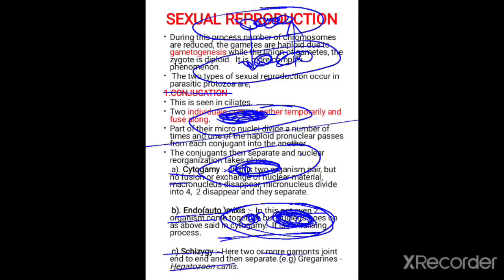This is about the sexual reproduction of protozoans, which includes cytogamy, endomixis, and syzygу. In conjugation, exchange of nuclear material takes place. In cytogamy, there is no exchange of nuclear material but two organisms pair, the macronucleus disappears, the micronucleus divides leading to pronuclei formation, and those pronuclei fuse to form the nucleus.